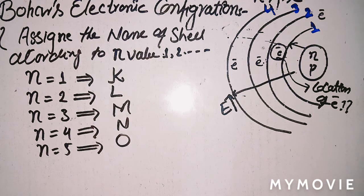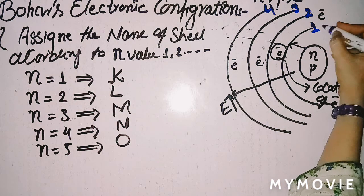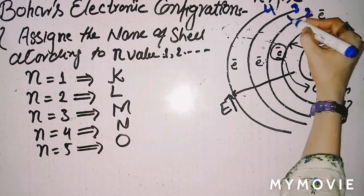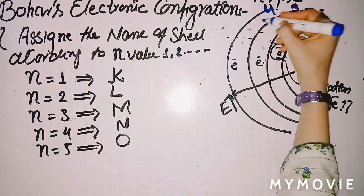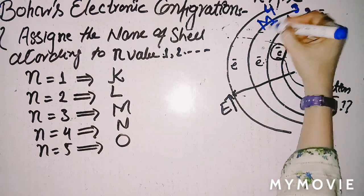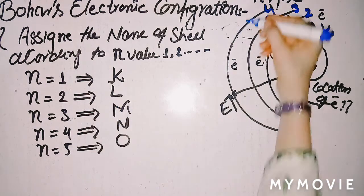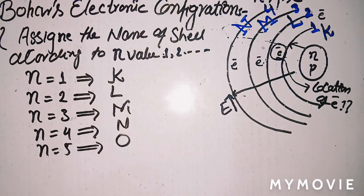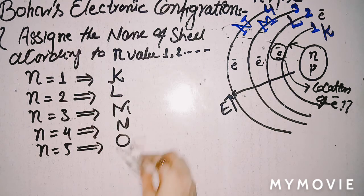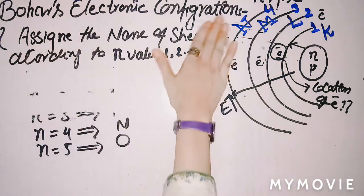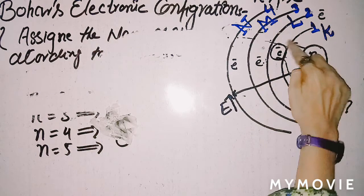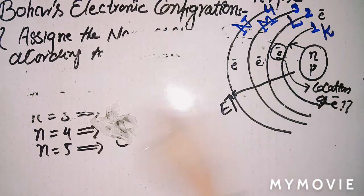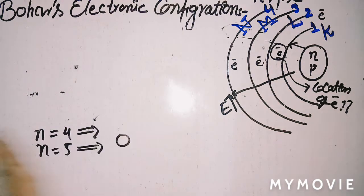So, in this case, the first shell is called K-shell, the second shell is L-shell, the third shell is M-shell, and the fourth shell is N-shell, and so on. If you have to locate an electron's position, you say: K-shell contains one electron — K-shell means first shell.